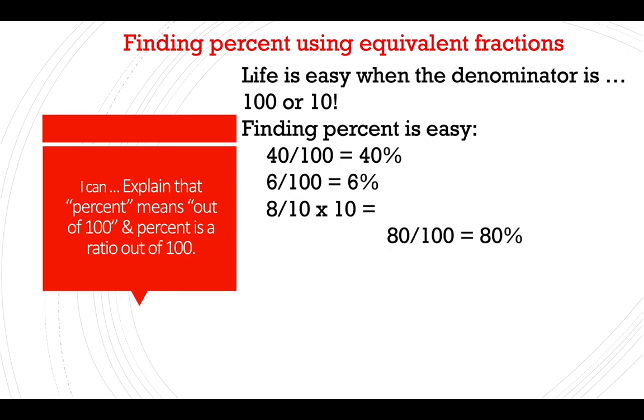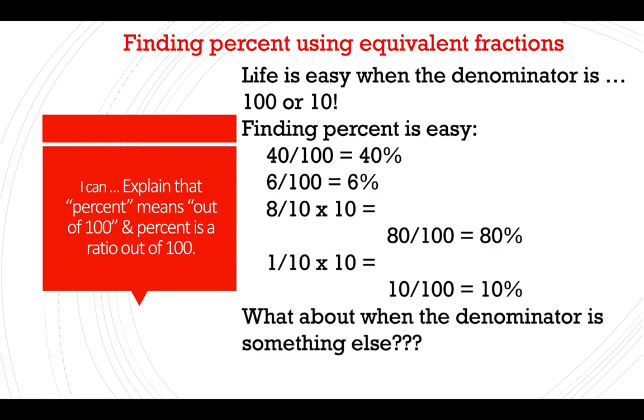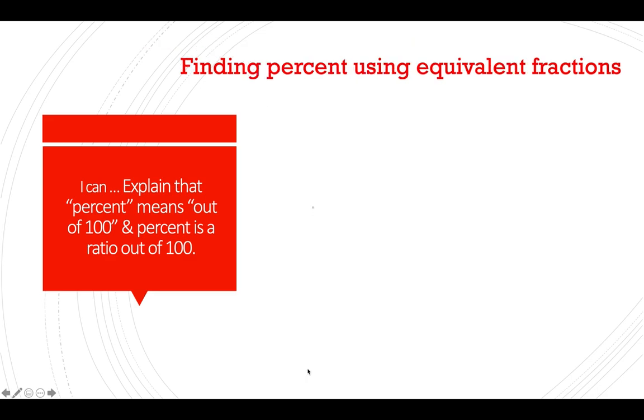Here's a couple of examples. 40 over 100 is 40%. 6 over 100 is not 60%, but it is 6%. Remember that? This is a really small amount. If we did 8 over 10, that's also easy. We would just multiply by 10. We would be getting 80%. What about when the denominator is something else? What if the denominator is not 100 or 10? Not so easy. That's what we're doing today.